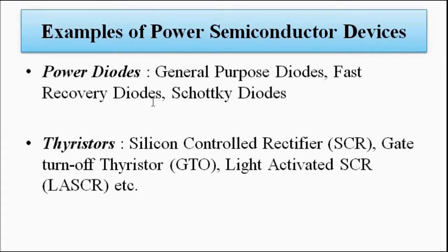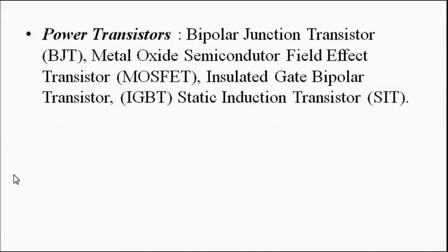Examples of power diodes include general purpose diodes, fast recovery diodes, and Schottky diodes, which will be discussed in detail in separate videos. Examples of thyristors are the Silicon Controlled Rectifier (SCR), Gate Turn-Off thyristor (GTO), Light Activated Silicon Controlled Rectifier (LASCR), and others. Power transistors include the Bipolar Junction Transistor (BJT), Metal Oxide Semiconductor Field Effect Transistor (MOSFET), Insulated Gate Bipolar Transistor (IGBT), and Static Induction Transistor (SIT).